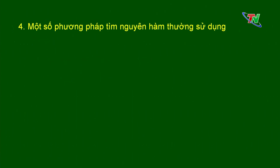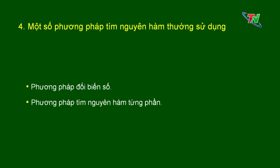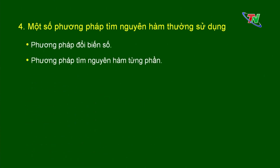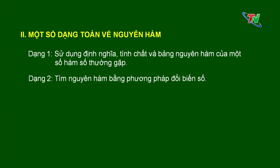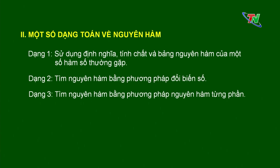Tiếp theo là một số phương pháp tìm nguyên hàm thường sử dụng. Chúng ta thường sử dụng 2 phép tính chính: thứ nhất là phương pháp đổi biến số, thứ 2 là phương pháp tìm nguyên hàm từng phần. Nội dung của 2 phép tính này sẽ được ôn tập ở phần sau. Tiếp theo chuyển sang phần II — một số dạng toán về nguyên hàm: dạng số 1 sử dụng định nghĩa, tính chất và bảng nguyên hàm; dạng số 2 tìm nguyên hàm bằng phép đổi biến số; dạng số 3 tìm nguyên hàm bằng phương pháp nguyên hàm từng phần.